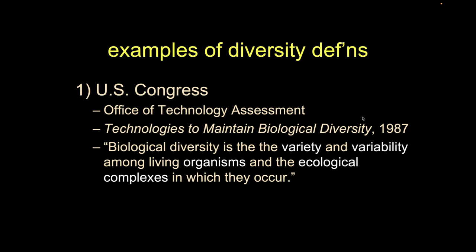Let's talk about some official definitions of biodiversity. This is from the U.S. Congress — the Office of Technology Assessment, one of the nonpartisan entities of Congress. In a report from 1987, they defined biodiversity as the variety and variability among living organisms and the ecological complexes in which they occur. This definition talks about diversity but also adds in not just the things themselves, but actually how they interact with ecosystems — how they interact with the living systems of the planet.